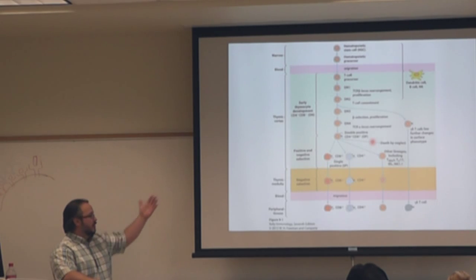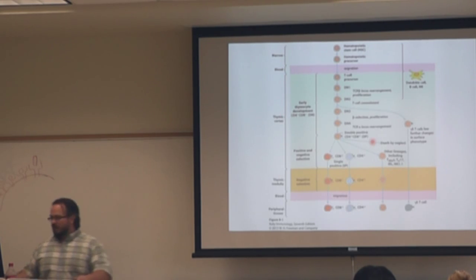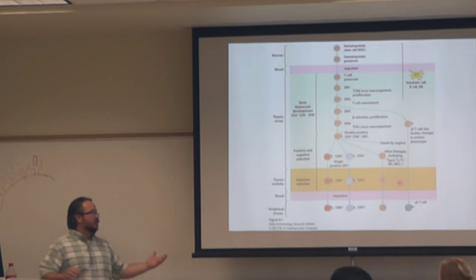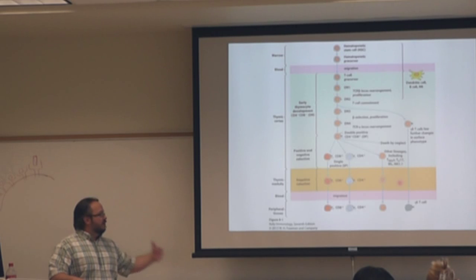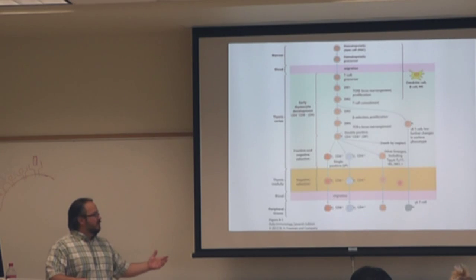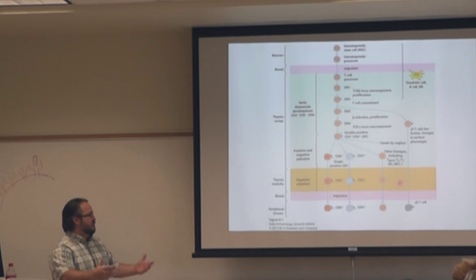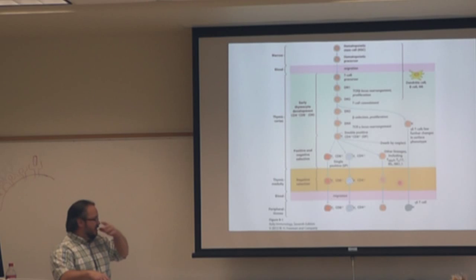They undergo positive and negative selection happening in the thymic cortex, and then they go into the thymic medulla, where they majorly undergo negative selection to delete T cells that recognize self. Once they have developed and been selected to become single positive cells, they will get a signal to leave the thymus and go out to the periphery, and then they'll become a mature cell over time and respond to stimuli differently.